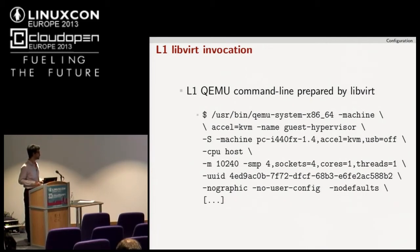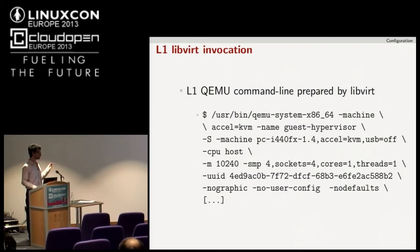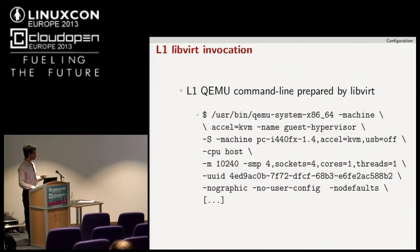This is a LibVirt invocation where CPU host pass-through is used. You can see the QEMU/KVM invocation uses '-cpu host', meaning it exposes the host CPU model to the L1 hypervisor. The QEMU/KVM command line is fairly ugly, but people are working to get it resolved. Yesterday at the KVM Forum there was a lot of discussion around improving these aspects.